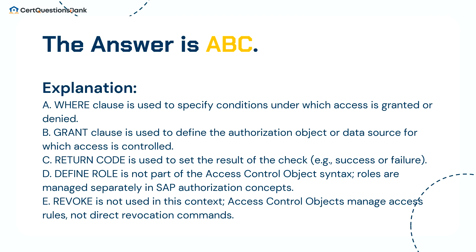The answer is A, B, and C. A — Where clause is used to specify conditions under which access is granted or denied. B — Grant clause is used to define the authorization object or data source for which access is controlled. C — Return code is used to set the result of the check, e.g., success or failure. D — Define role is not part of the access control object syntax; roles are managed separately in SAP authorization concepts. E — Revoke is not used in this context; access control objects manage access rules, not direct revocation commands.